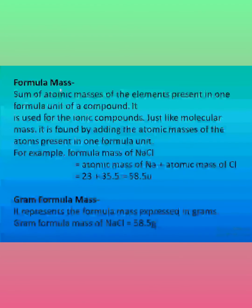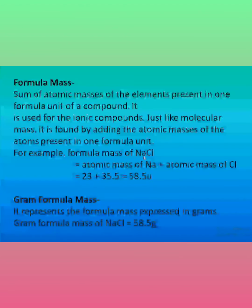This is similar to molecular mass, but we have to remember that when we talk about ionic substances or ionic compounds, we cannot take a molecule because it is not a single entity. So in that case, we take formula mass and calculate one formula unit of the substance. For example, NaCl is an ionic compound. It has two atoms — sodium and chlorine — so we take the atomic mass of sodium plus the atomic mass of chlorine: 23 plus 35.5, giving us 58.5.